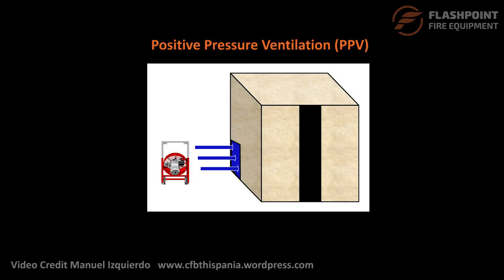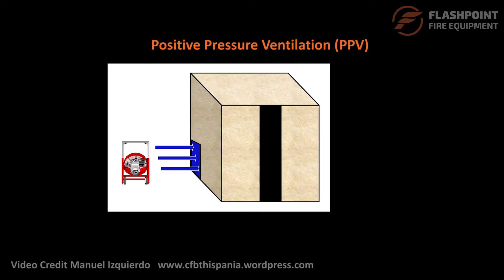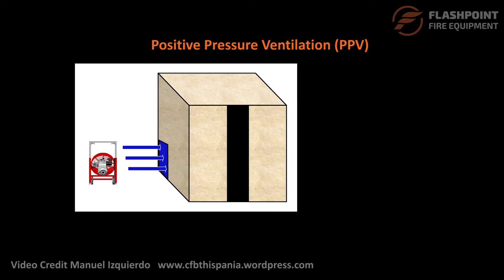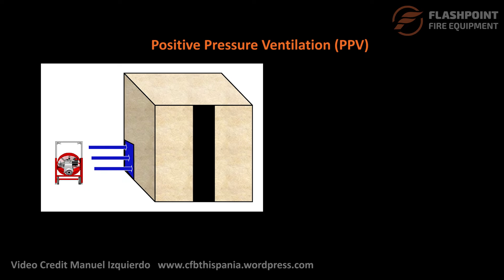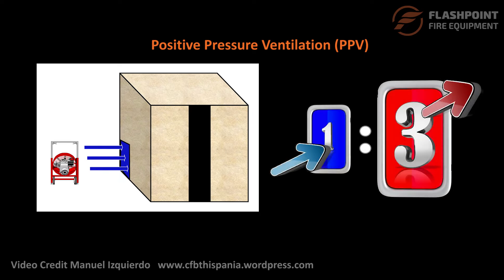Positive pressure ventilation will also be introduced in each exercise to show its impact on temperatures and fire growth. In each case, the ratio of inlet to outlet sizes for the positive pressure ventilation will be 1 to 3.